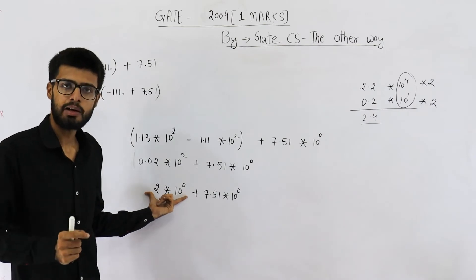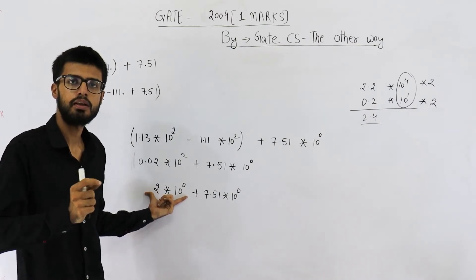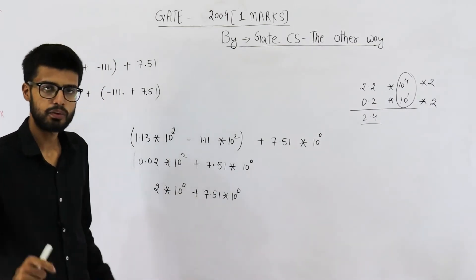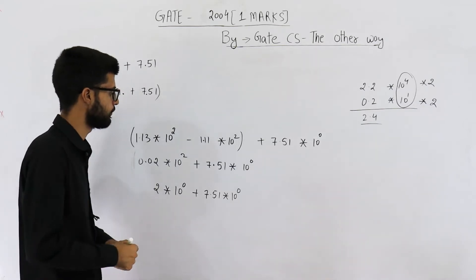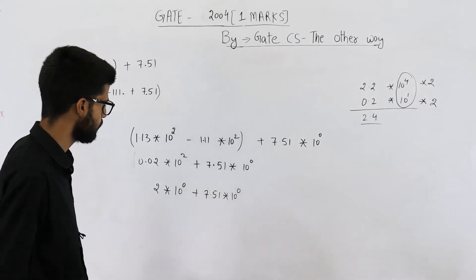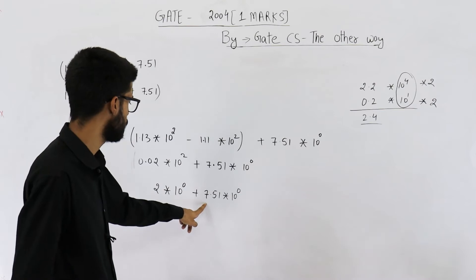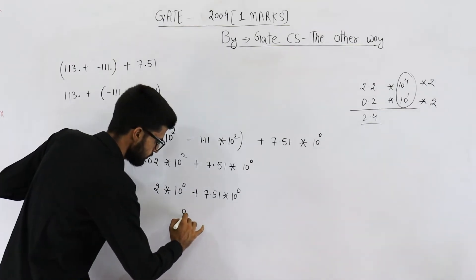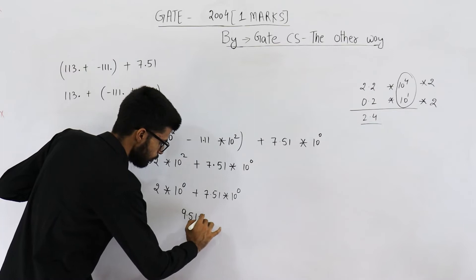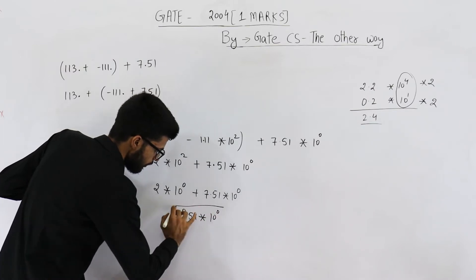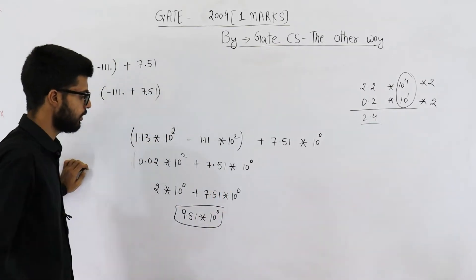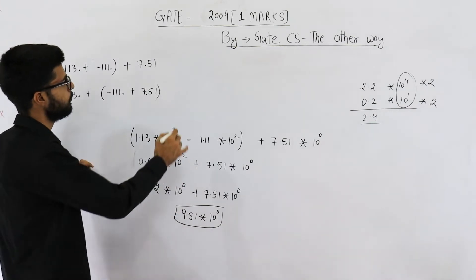Anyways, let's add both of them. 7 plus 2 becomes 9 and the answer is 9.51 × 10⁰. So first expression will give you an answer of 9.51.